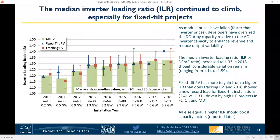The final technology aspect I want to highlight before turning to pricing is the inverter loading ratio, or ILR, which measures the DC capacity of the PV array relative to the AC capacity of the inverter — also known as the DC to AC ratio. The median ILR has increased pretty steadily from around 1.2 in the early days of the market to above 1.3 in 2018. This progressive oversizing of the PV array optimizes inverter throughput as the cost of modules has declined faster than the cost of inverters. Oversizing can lead to some clipping at midday, but that is more than offset by increased production during morning and evening shoulder periods, leading to a net increase in AC capacity factor.